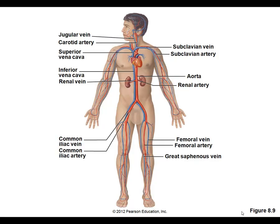We all understand from the lecture that we have two circulations. One is the pulmonary circulation and the other is the systemic circulation. The pulmonary circulation is not showing the lungs here — all you see is the pulmonary artery feeding into them and then the pulmonary veins draining the lungs back into the left atrium, which completes the pulmonary circulation.